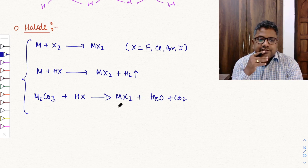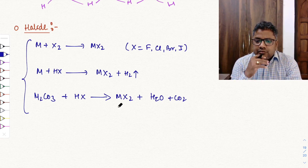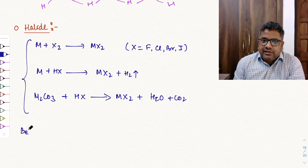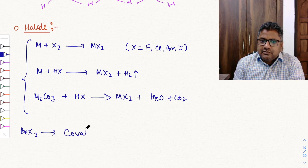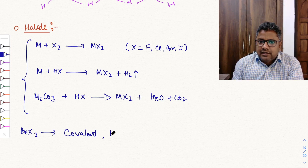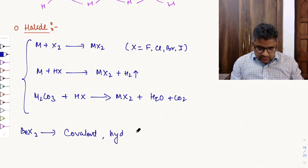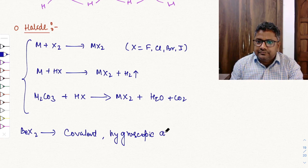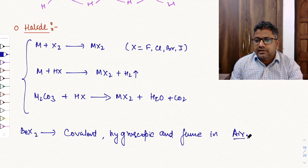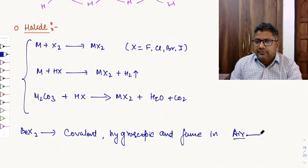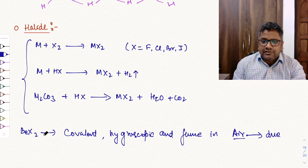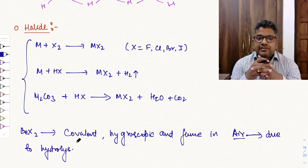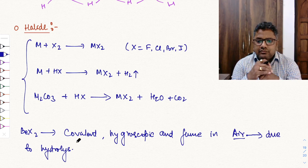Beryllium has some different properties with halides. Beryllium halides (BeX2) are covalent, hygroscopic, and fume in air due to hydrolysis. Because they are covalent and hygroscopic, they readily undergo hydrolysis in moist air, releasing HCl fumes.